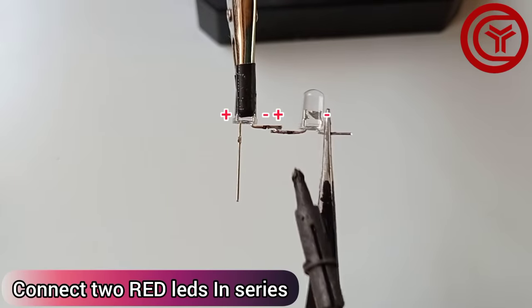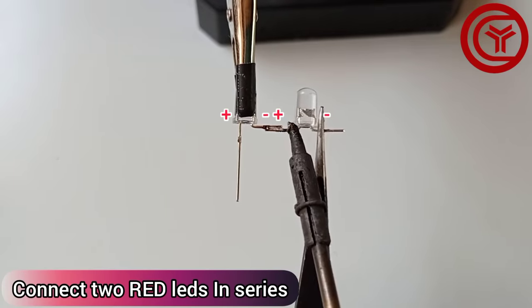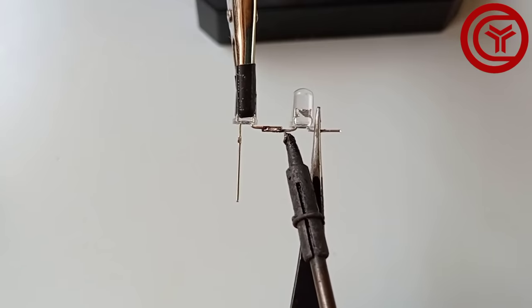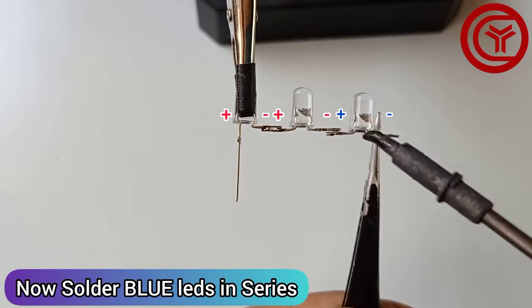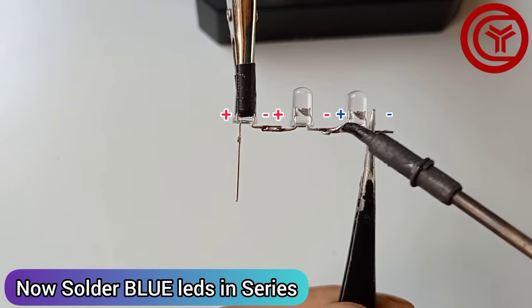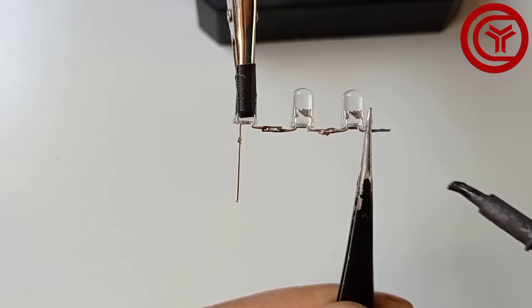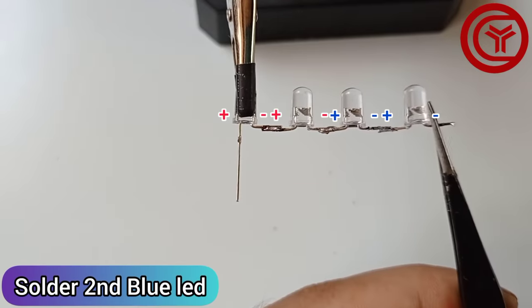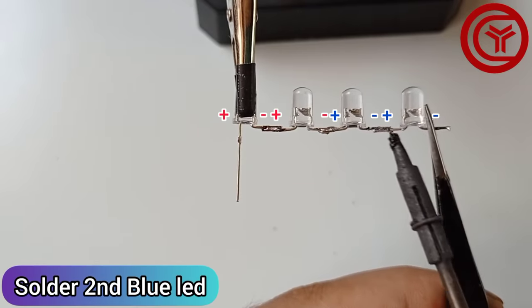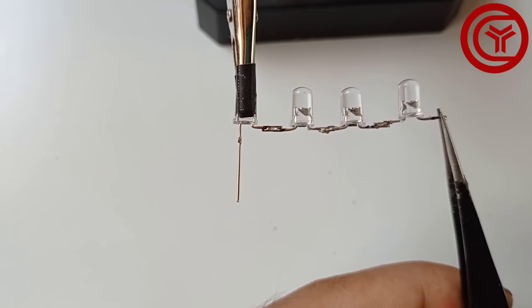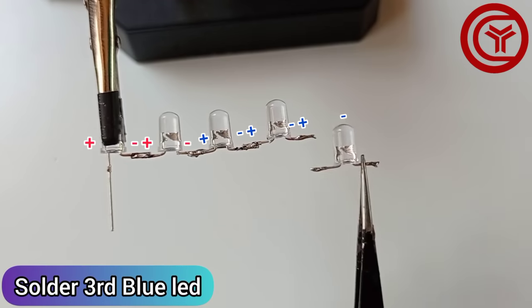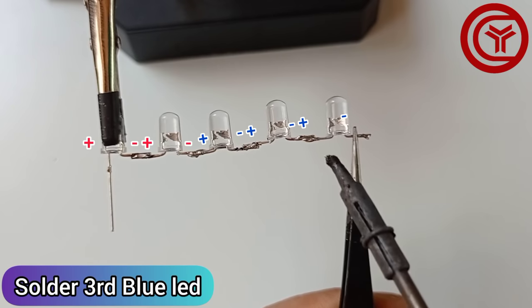Solder other red LED in series. Now solder blue LED in series with red LED. Solder 2nd blue LED in series, and solder 3rd blue LED in series.